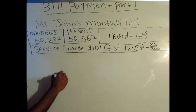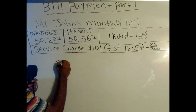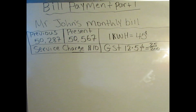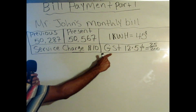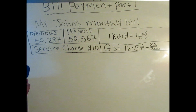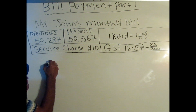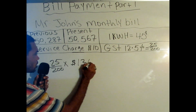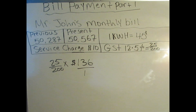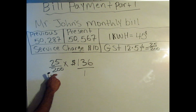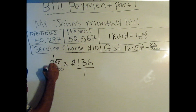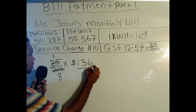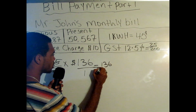Now for the final step, we're finding the 12.5% GST. Remember, we convert 12.5% to 25 over 200. So it's 25 over 200 times the bill amount, which is $136 over 1. We cancel out: 25 goes into 25 once, and 25 goes into 200 eight times. So we're left with 1 times 136 over 8, which equals 136 over 8.